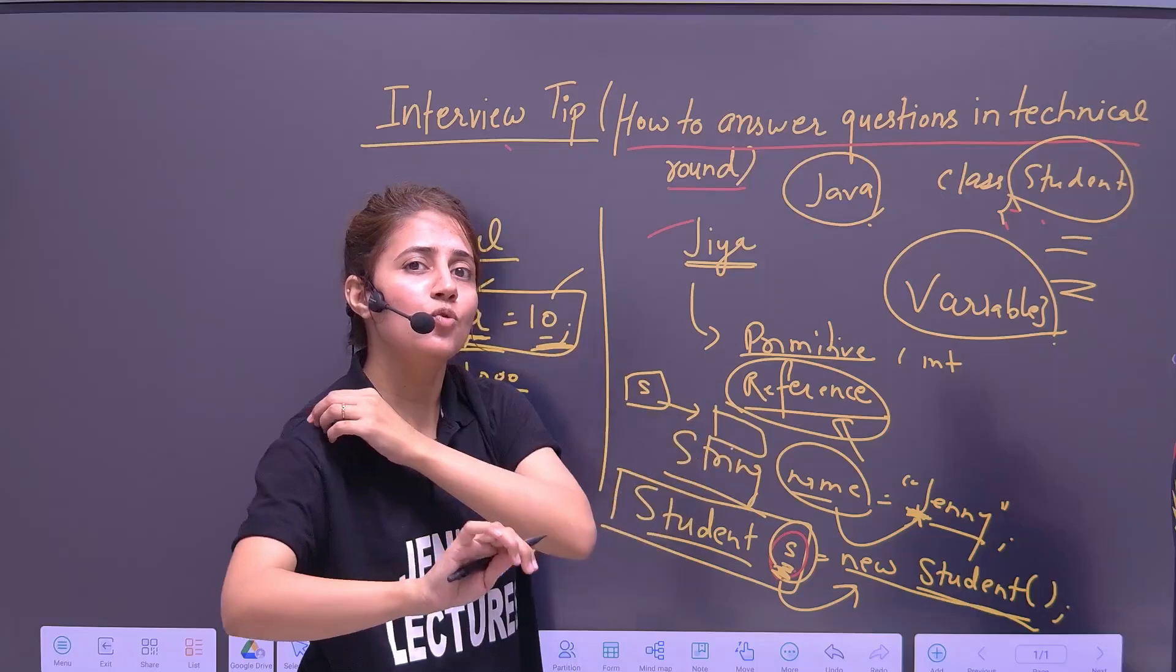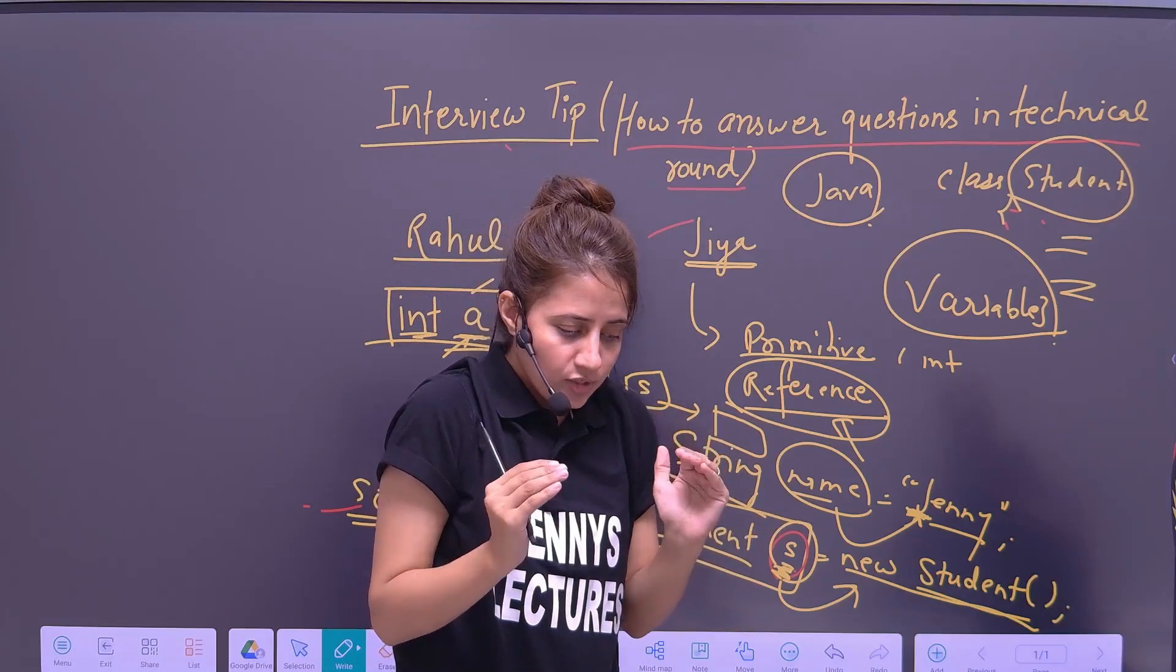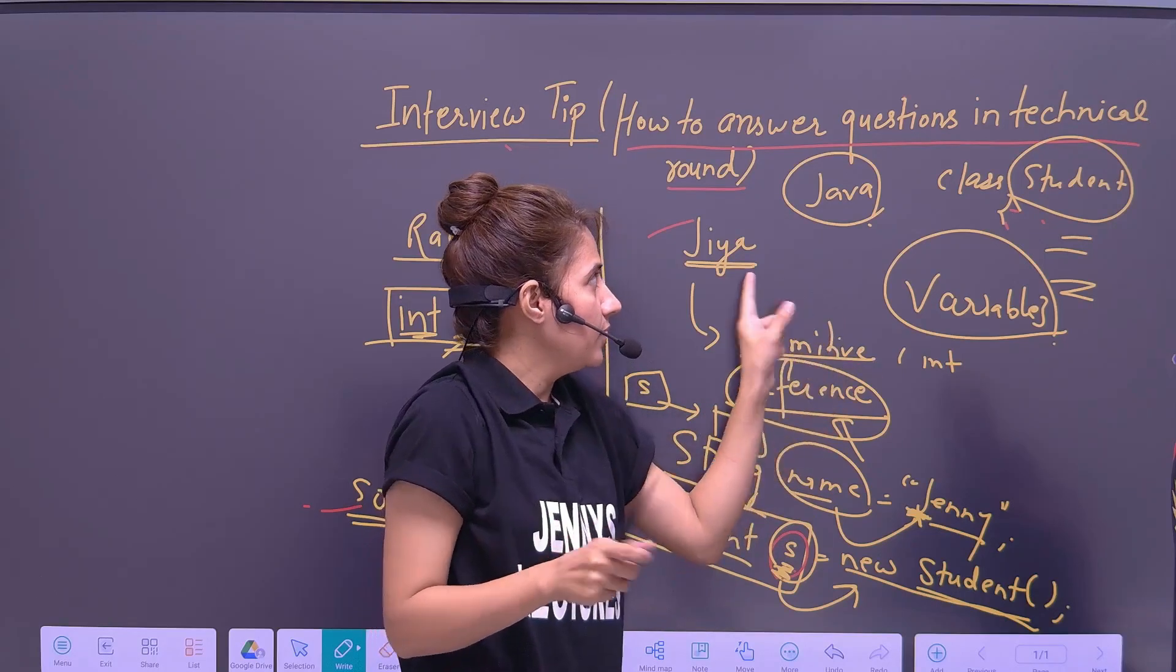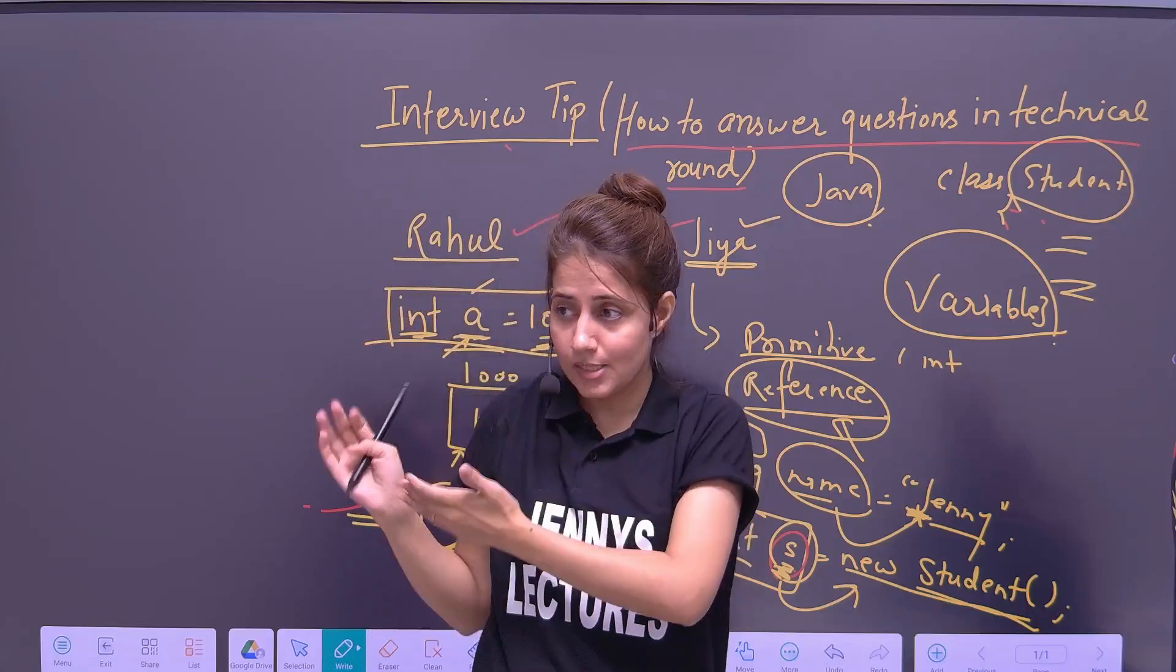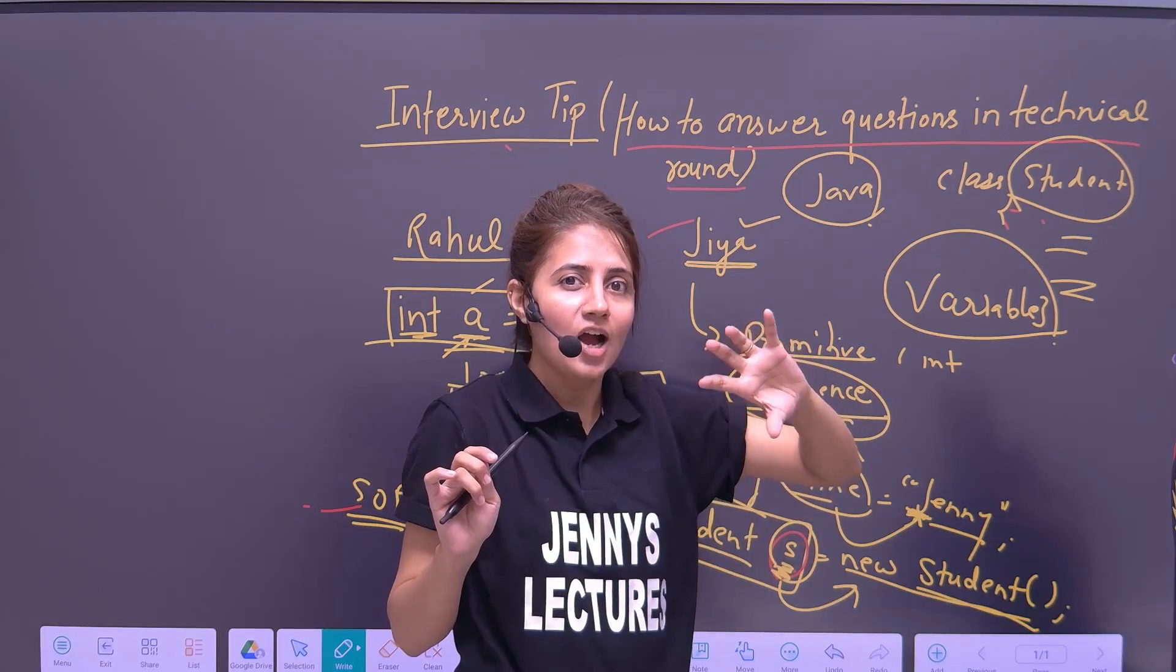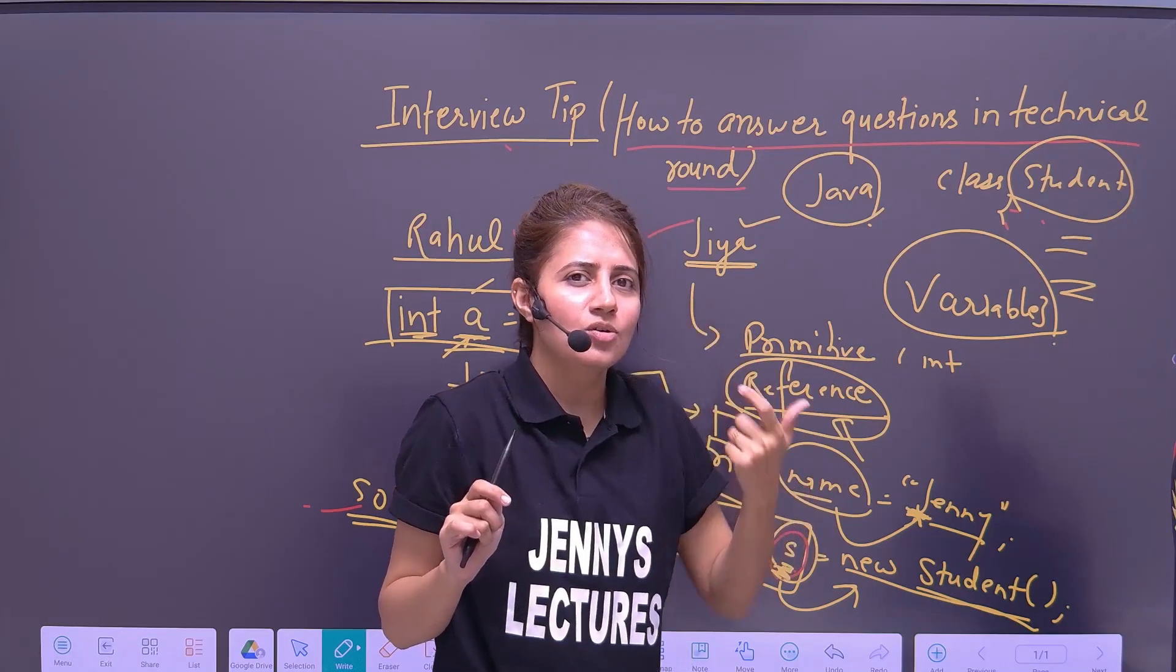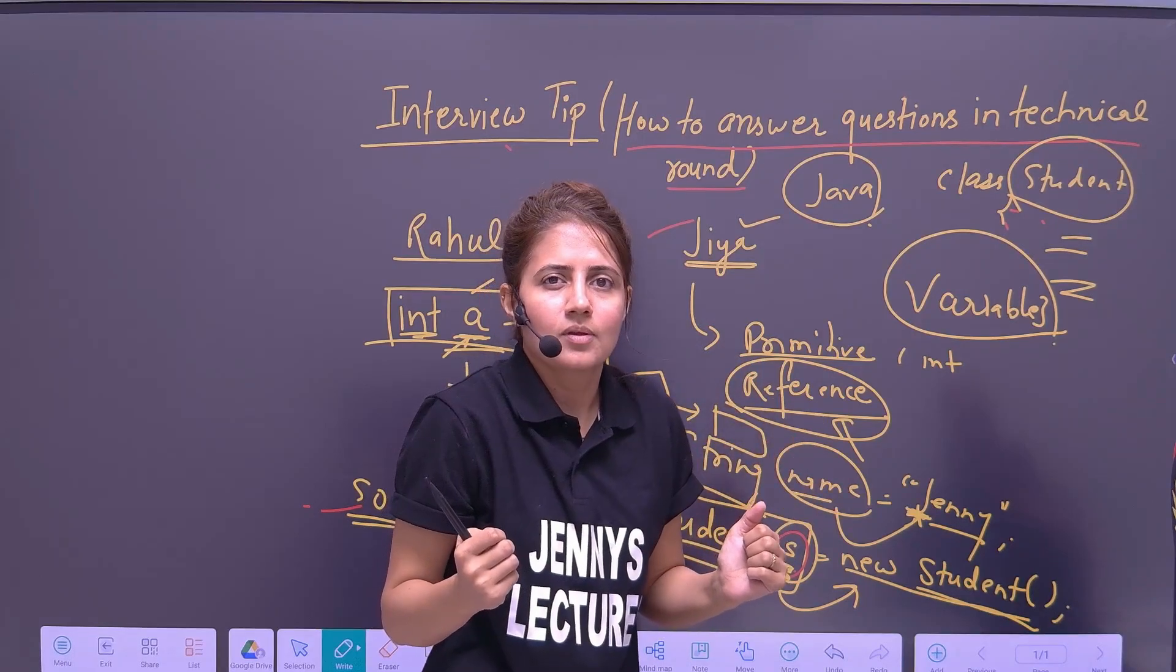So yeah the question was basic. What is a variable? But how do you answer this question? How much knowledge you have about that basic concept? That will play an important role and on this basis they are going to filter out. Now maybe interviewer will select Jia and obviously Rahul will say my answer was also correct. And yeah he's right. His answer is also correct. But how much, in how much deep you know about that basic concept, that depends. So it's not like that you know the basic concept and that's it. Try to go in a little bit further in that basic concept as well.